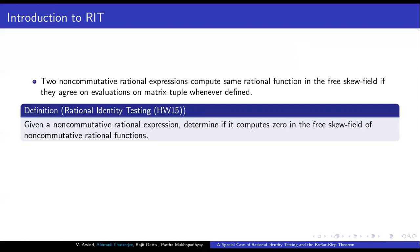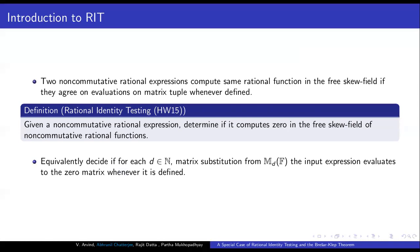Rubius and Wigderson defined the problem of Rational Identity Testing, which can be thought of as a generalization of Polynomial Identity Testing, PIT. In the RIT problem, given a non-commutative rational expression, we are asked to determine whether it computes a zero function in the universal free skew field. Equivalently, given a rational expression, we want to know whether for every matrix substitution of every dimension, this expression evaluates to the zero matrix. Since we must check all dimensions, it is not obvious whether a polynomial time algorithm exists.